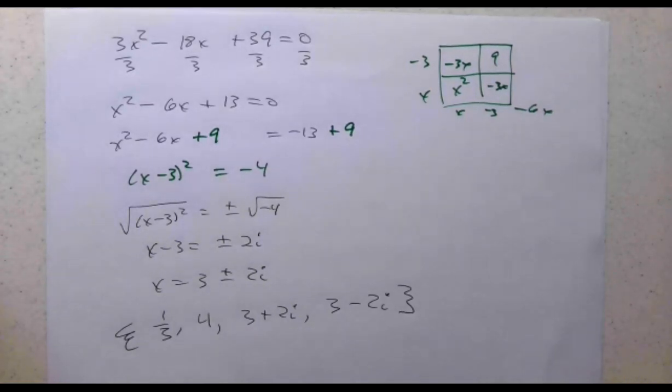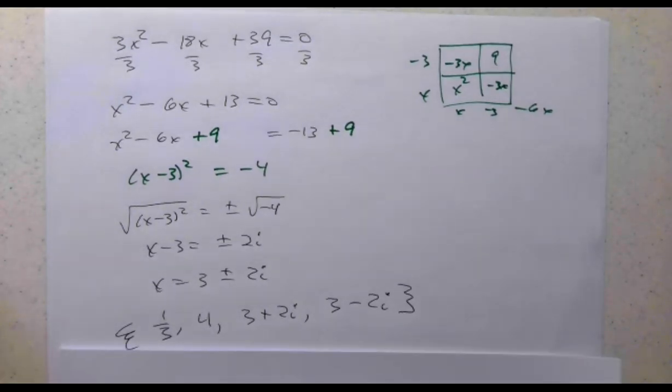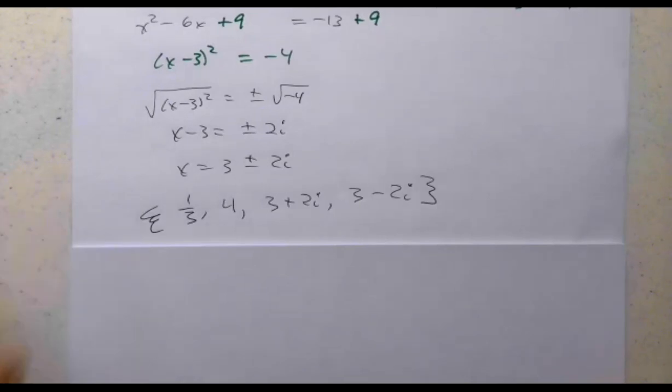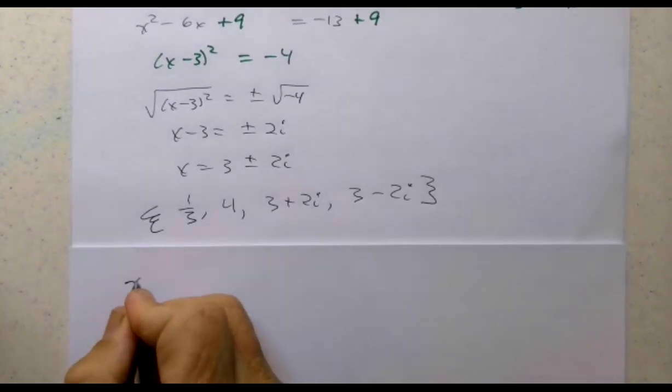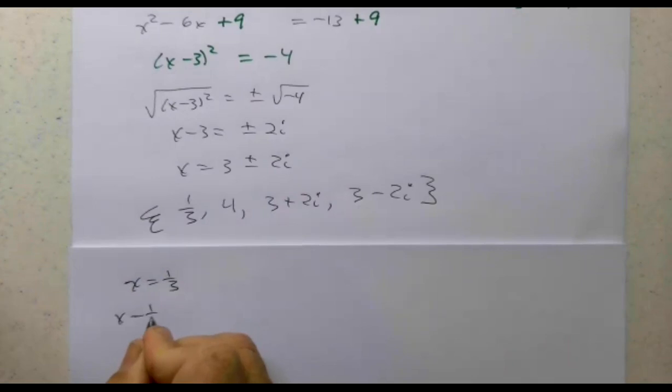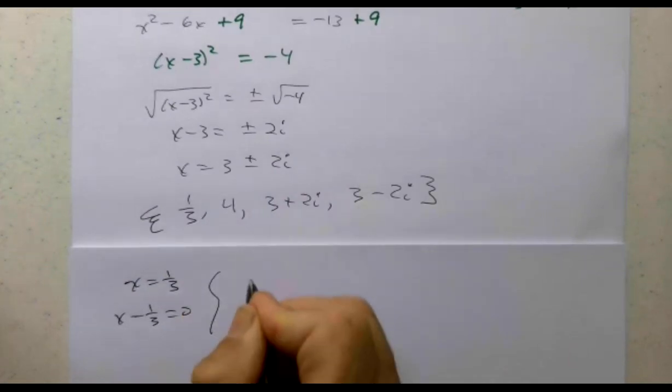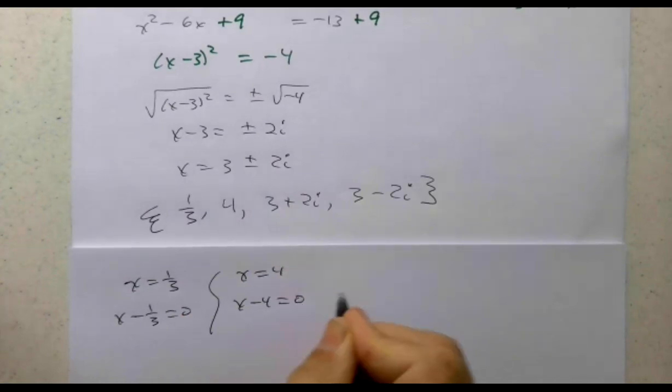So how do we do that? And what do we have if we're going to write this in factored form? Well, x equals 1/3, so x - 1/3 = 0. x equals 4, so x - 4 = 0.